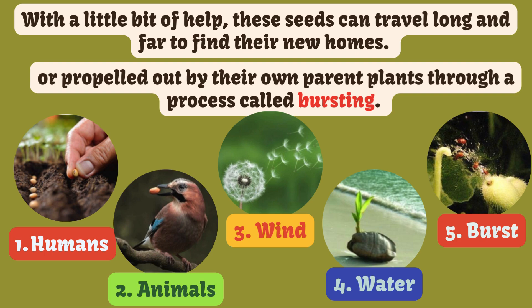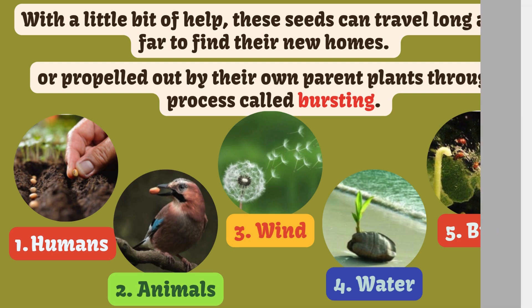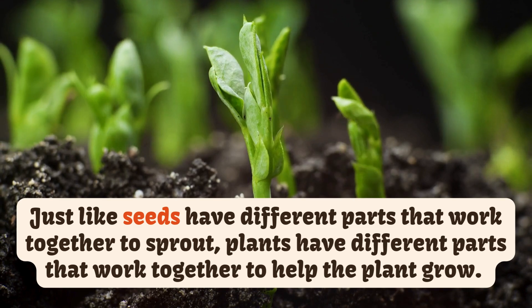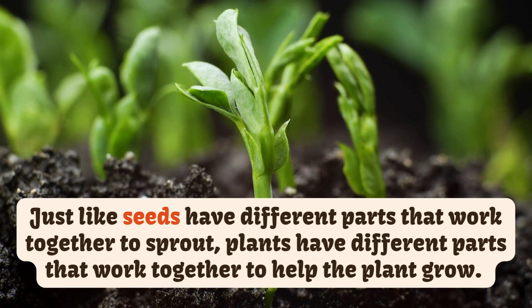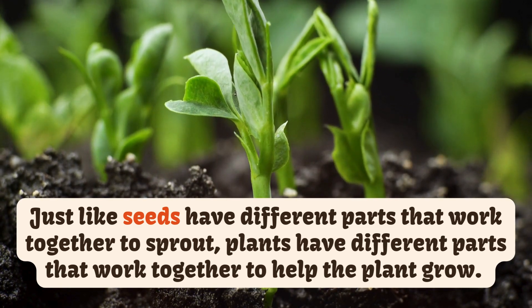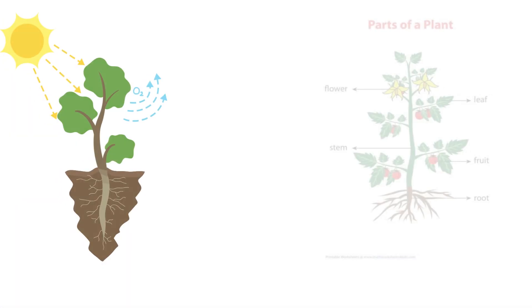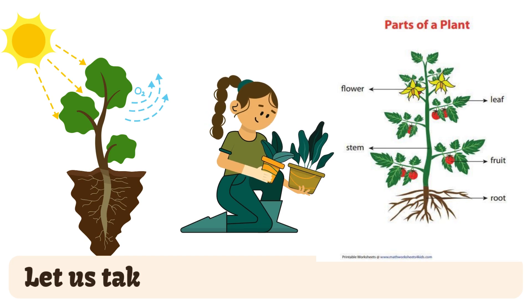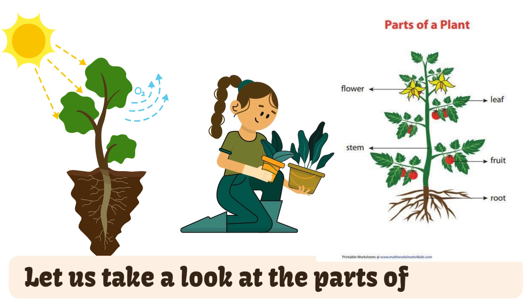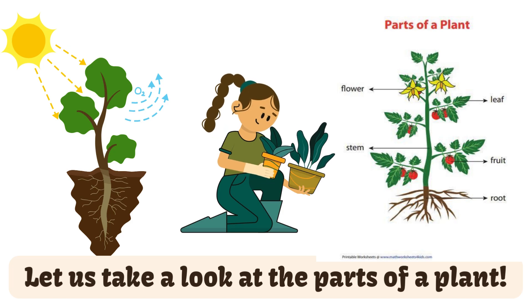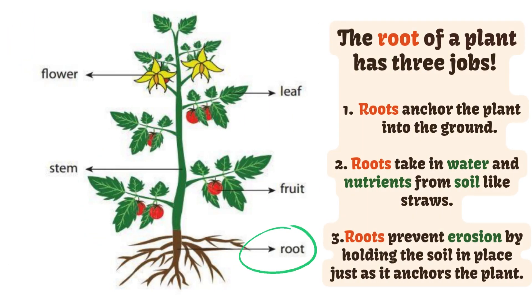Seeds can also be propelled out by their own parent plants through a process called bursting. Just like seeds have different parts that work together to sprout, plants have different parts that work together to help the plant grow. Let us take a look at the parts of a plant. The root of a plant has three jobs: roots anchor the plant into the ground.